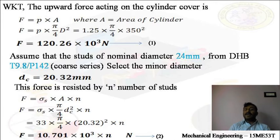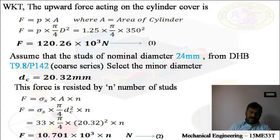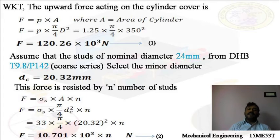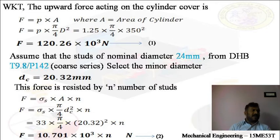Here, I will select 24 mm. Even 20 mm or 22 mm could be used, as those are standard values available in the design data handbook. Now, I am going to assume the nominal diameter of the studs as 24 mm. Corresponding to 24 mm in the design data handbook, from table 9.8, page number 142, for coarse series ISO metric threads, we select the minor diameter. The core diameter is 20.32 mm.